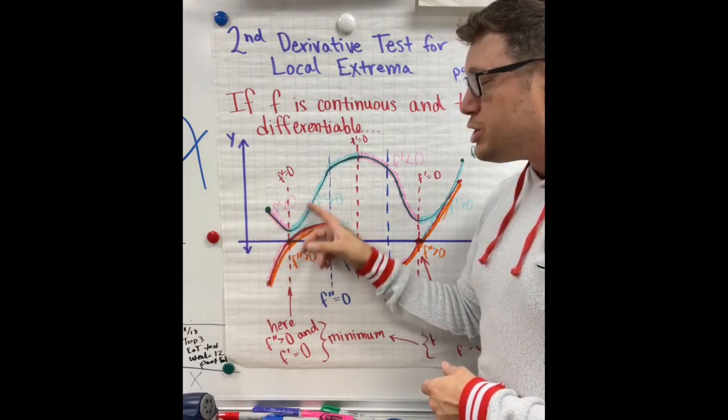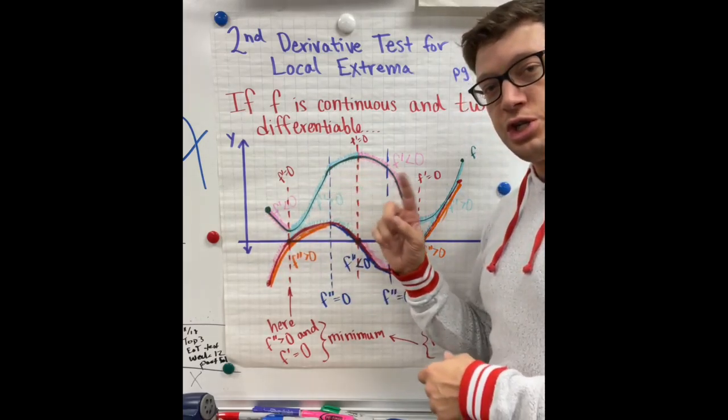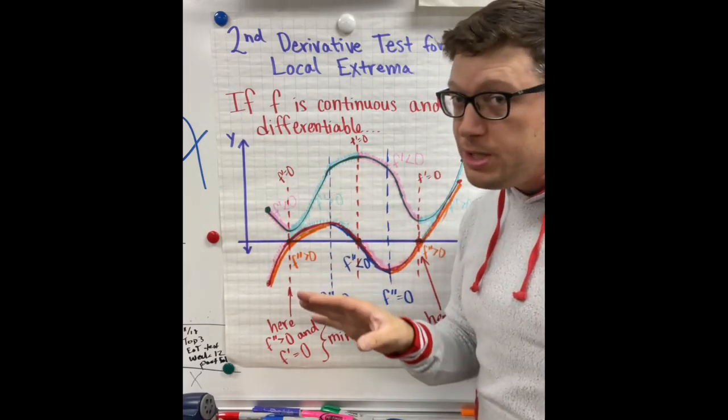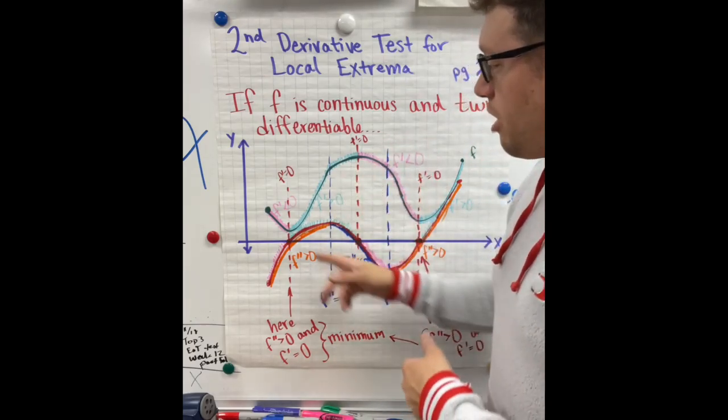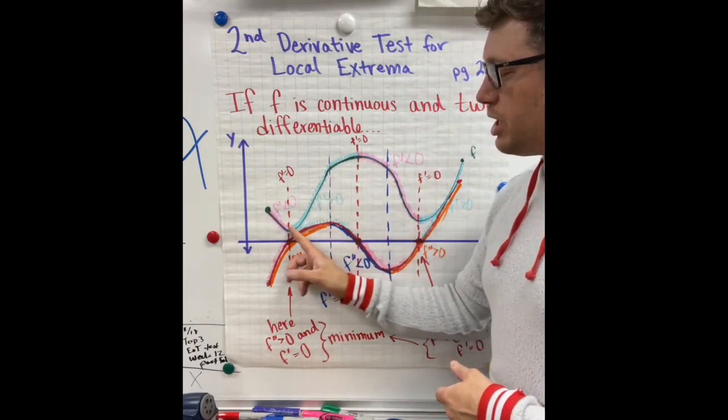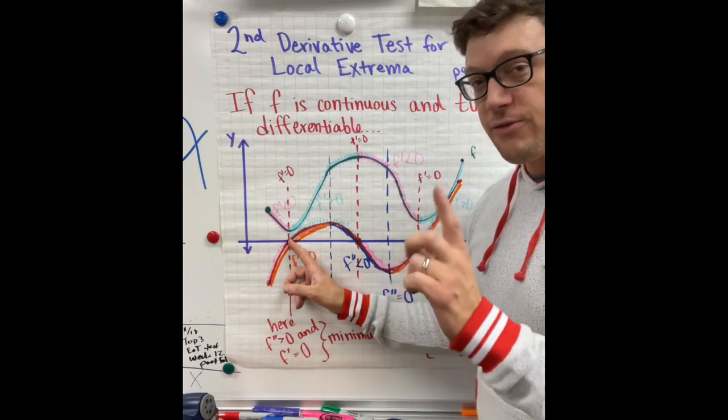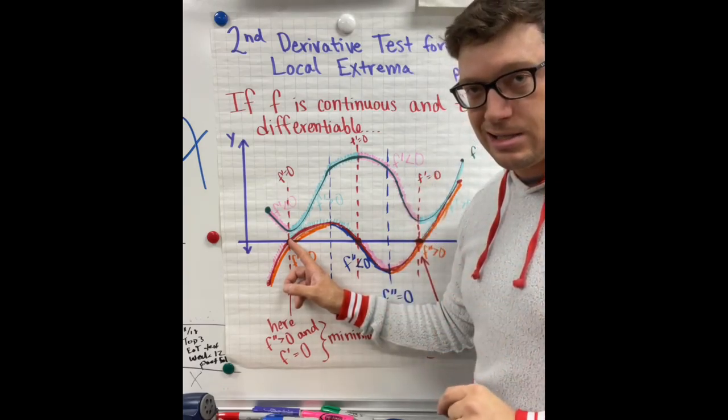What we did in the previous video — the first derivative test — is we had to analyze the first derivative. So that's what I have here. I've sketched the first derivative of the function, and everywhere that the original parent function changes direction — and it will be smooth because it's twice differentiable — is a place where the first derivative touches the x-axis.